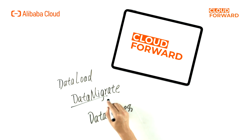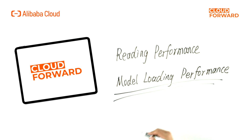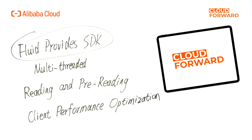Supported data operations by Fluid include data load, data migrate, and data process. In response to the issue of limited reading performance — such as the actual bandwidth used by the pod of AIGC inference service being much smaller than the theoretically available bandwidth — there is still room for optimization of model loading performance. Fluid provides an SDK that can accelerate the loading speed of client models through methods such as multi-thread reading and pre-reading, achieving client performance optimization for data access.